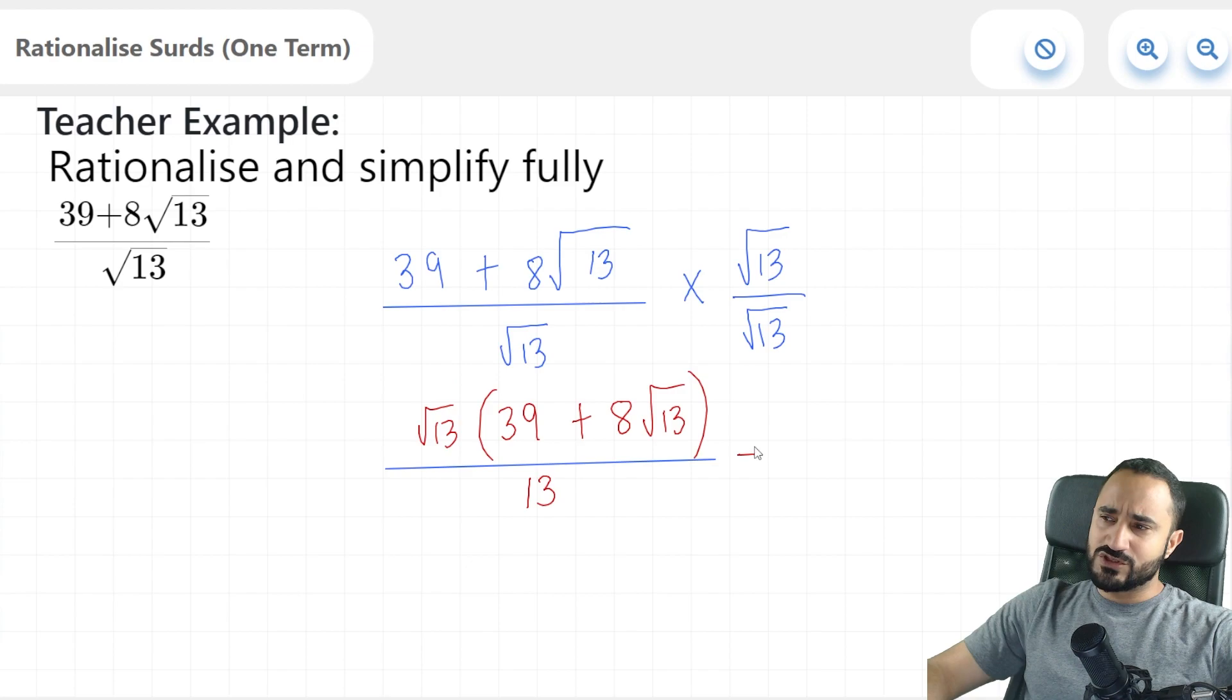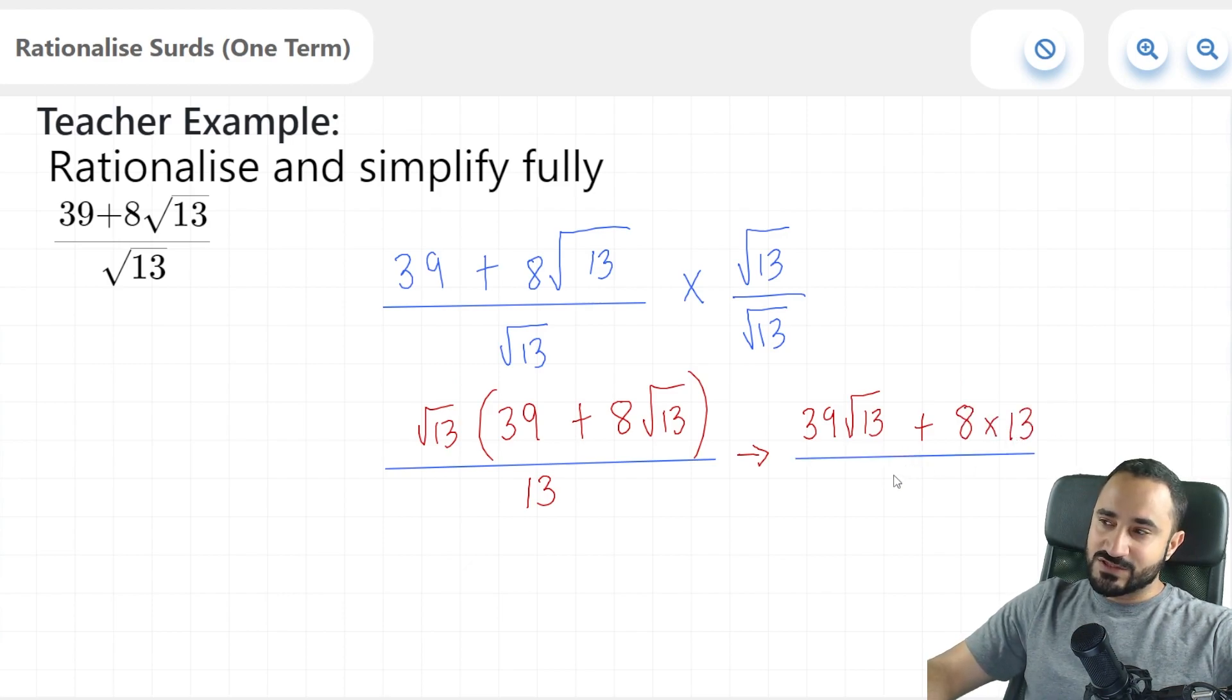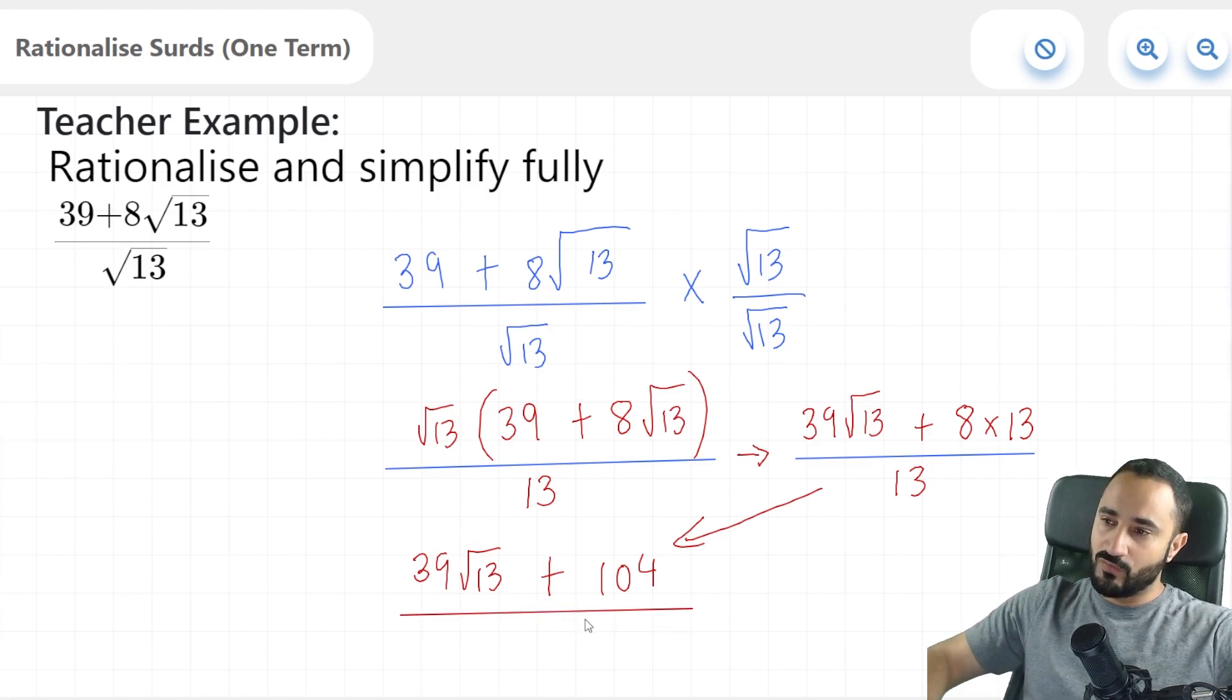But now this isn't fully simplified. So I'm going to expand this root 13 into the bracket. So it's going to be root 13 times 39, which is 39 lots of root 13. And this is going to be plus root 13 multiplied by 8 lots of root 13. So how you multiply these two out is you multiply this root 13 just by this root 13, and that's going to give us 13. The square root of 13 times the square root of 13 is the square root of 169, which breaks down to 13. And don't forget that this 8 is being multiplied onto this value. So this is going to give us 8 multiplied by 13. And this is all going to be over 13. And now let's simplify this further. So here we have 39 root 13 plus 8 times 13, which is 104. And this is all being divided by 13.